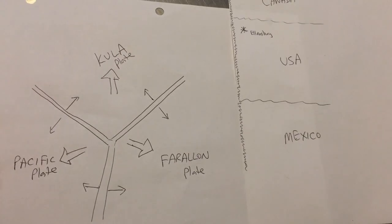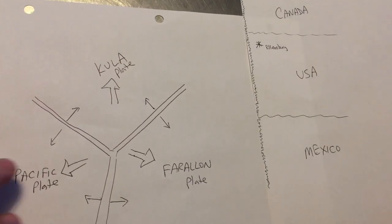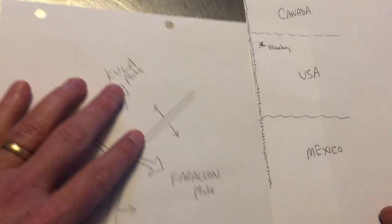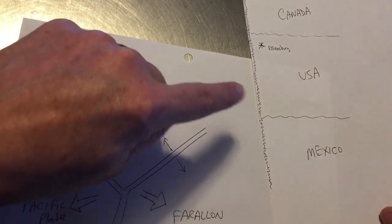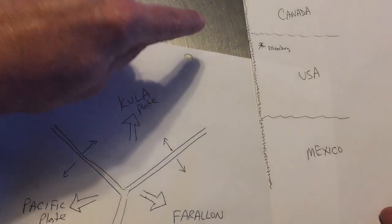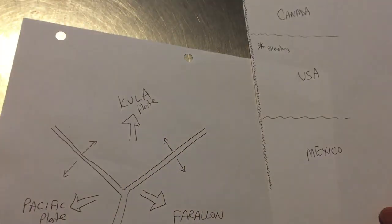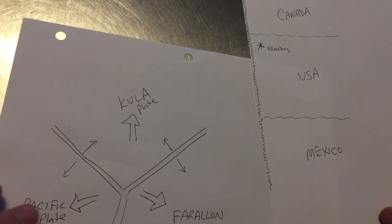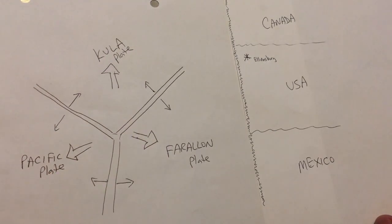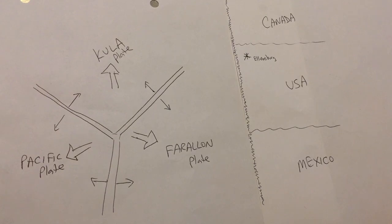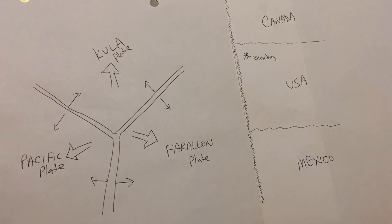And if we can show that, and if we can agree that that's a real thing, that's going to help this Baja BC concept to get Mount Stewart and other landmarks here into the Pacific Northwest, and some other things as well, including the demise of the Farallon plate. Over and out. Thank you.